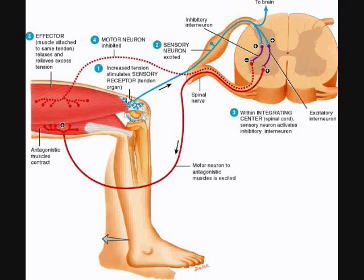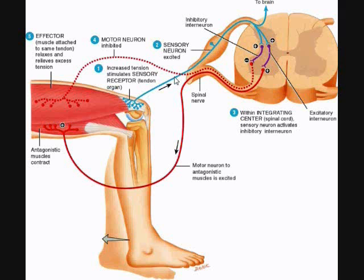The blue neuron here is the sensory neuron. We can see that in the musculotendinous junction of the quadricep muscle, we have all of these sensory receptors. In the tendon reflex, the sensory receptor is called a tendon organ, and it is stimulated by excessive quick contraction of a muscle. When the muscle contracts quickly and excessively, it'll stimulate these sensory receptors, which will generate a graded potential and then ultimately an action potential along the sensory neuron, following a typical reflex arc.